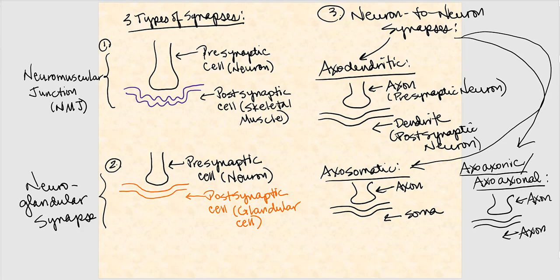The first type of synapse is referred to as a neuromuscular junction. The first cell is the presynaptic cell, and the second cell is the postsynaptic cell. In this neuromuscular junction, the presynaptic cell is a neuron and the postsynaptic cell is skeletal muscle, or it could be smooth muscle. Cell number one, the neuron, communicates with cell number two, the muscle — so this type of synapse is a neuromuscular junction.